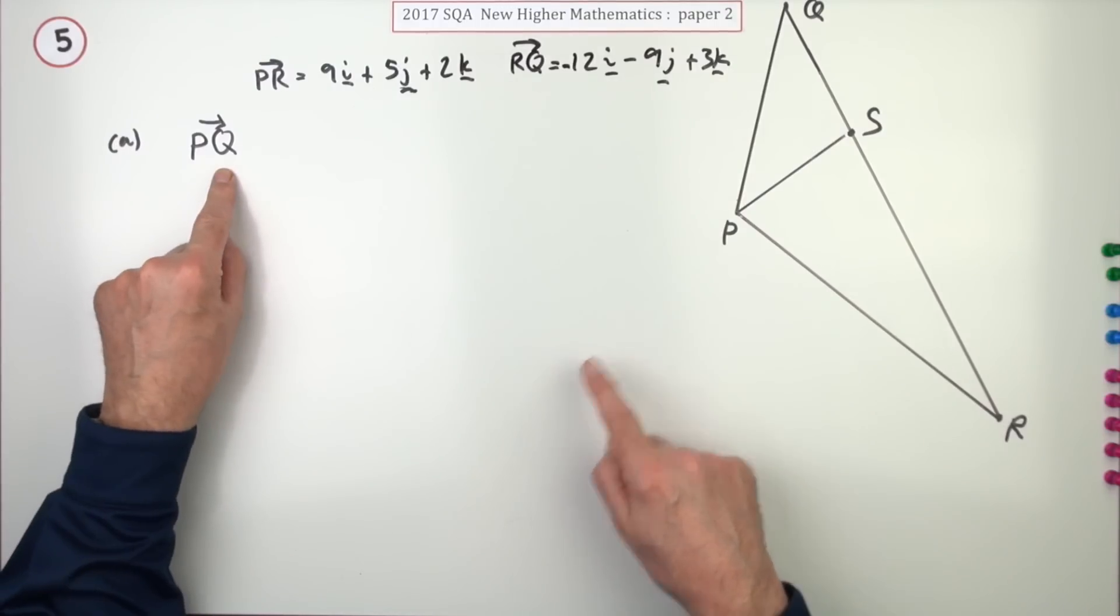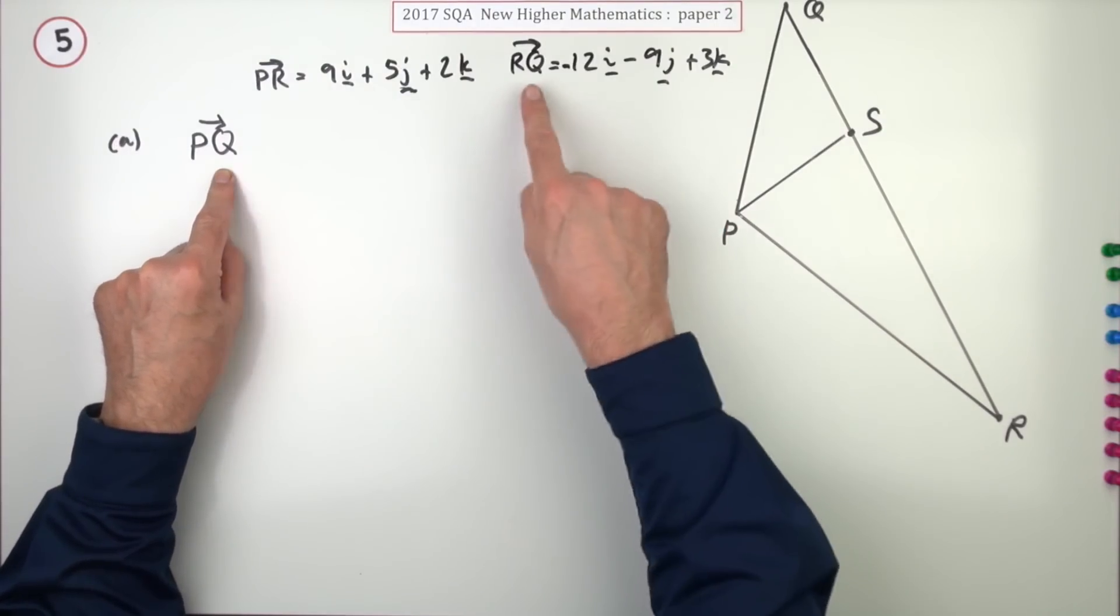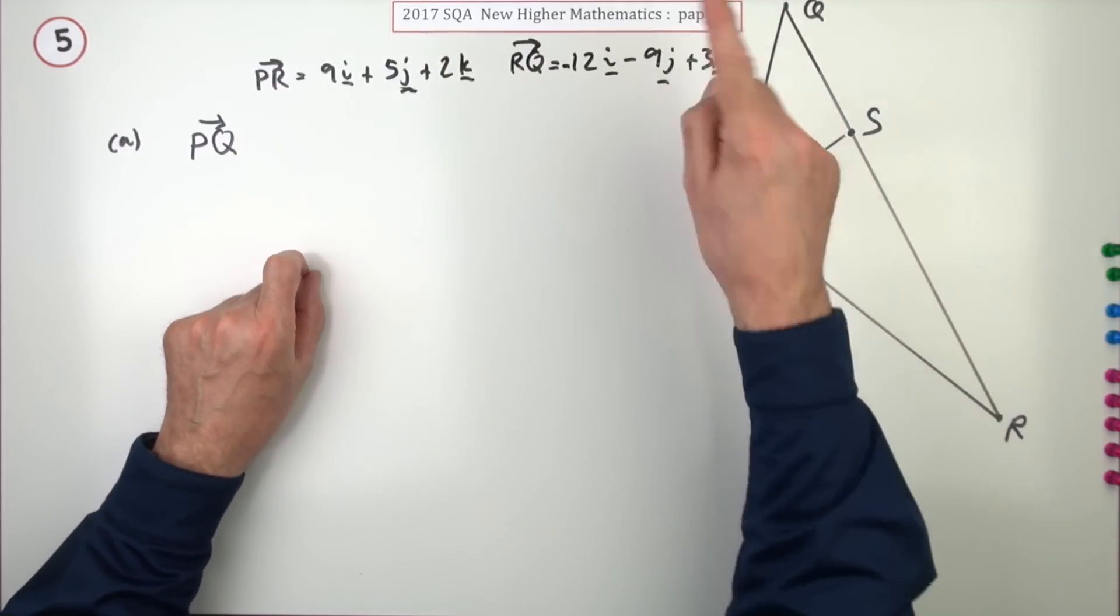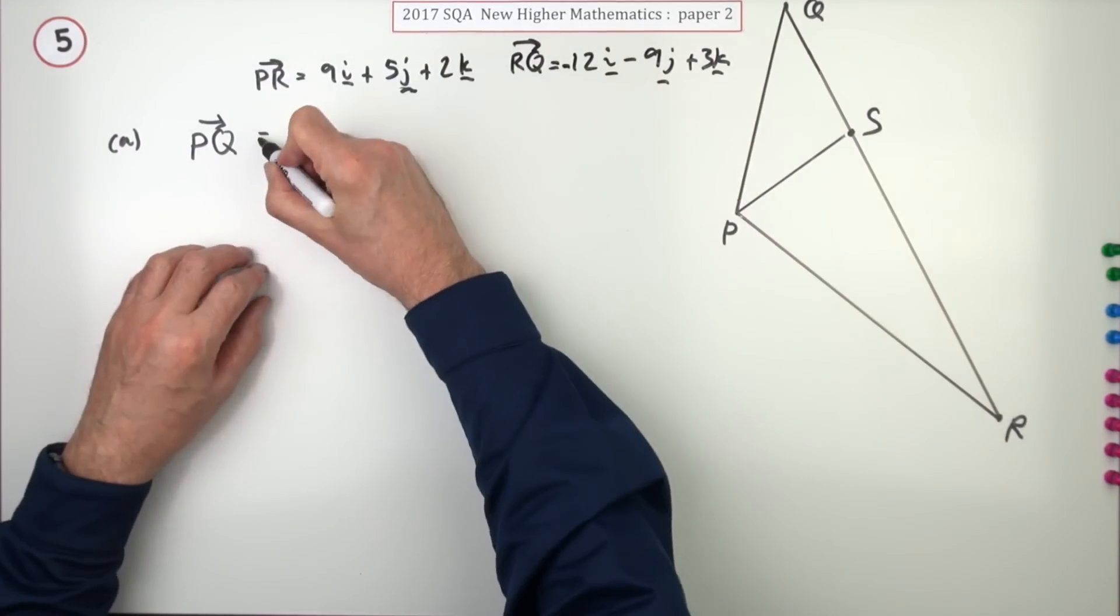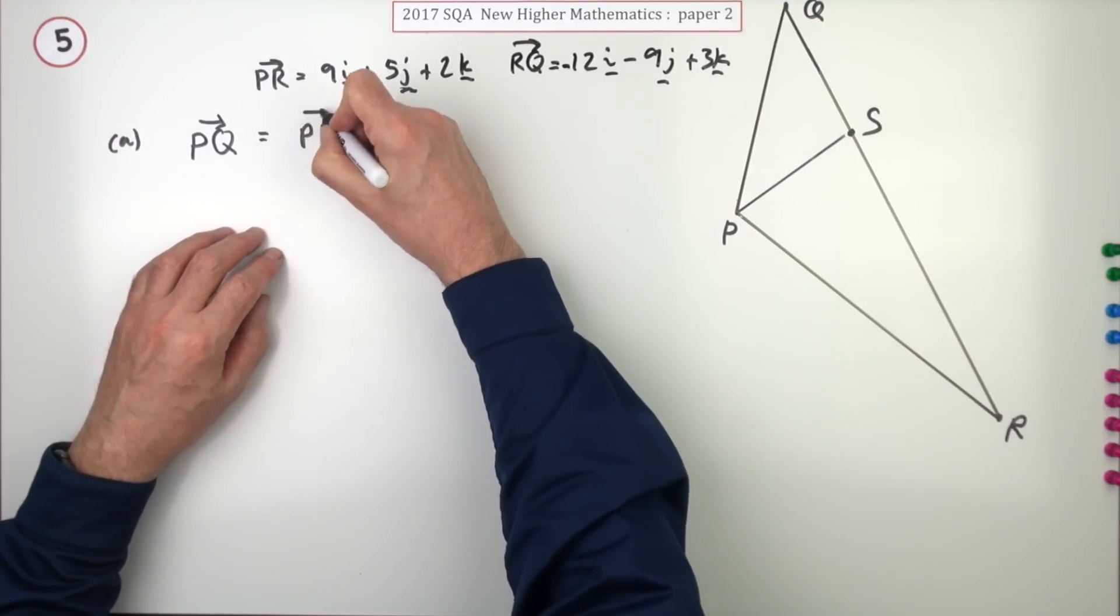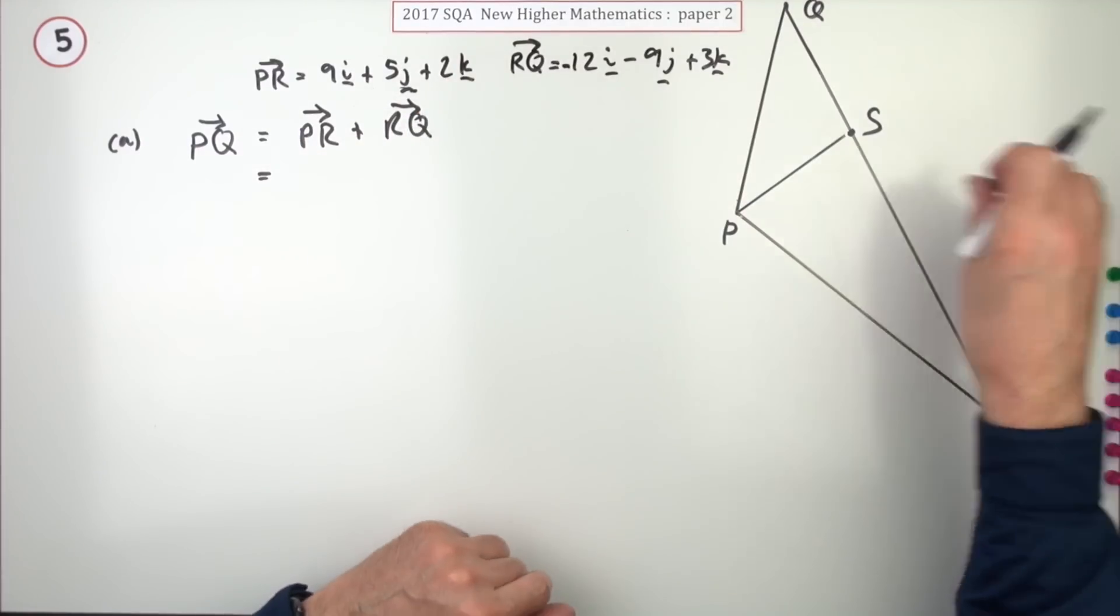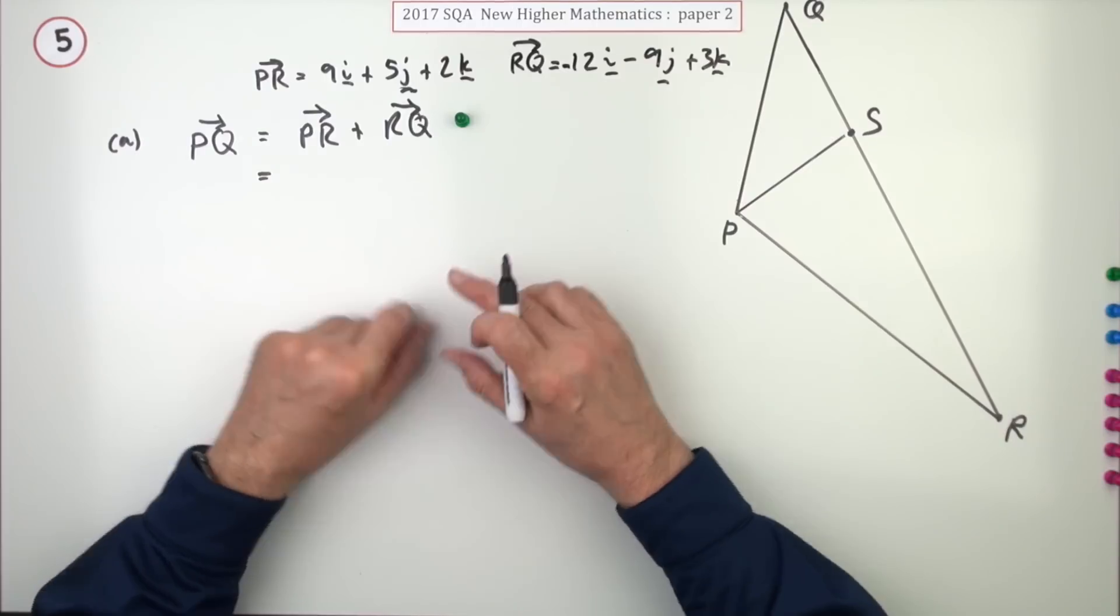Well, how can you get from P to Q? You can only travel along paths that you know and these are the paths that I know. So I could go from P to R, I know it, and R to Q. That's it then, isn't it? That's fairly straightforward. Go from P to R and then go from R to Q. Writing that down gets the first mark.